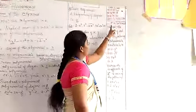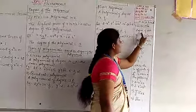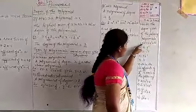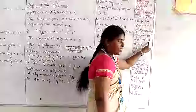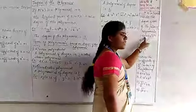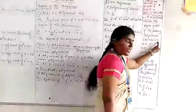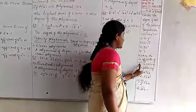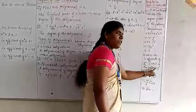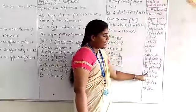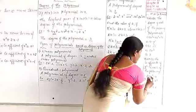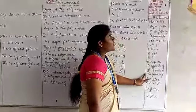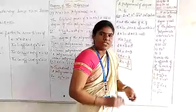Today's homework: First question — write the degrees of each of the following polynomials: 5x³ + 4x² + 7x. You mention only the highest degree. Second question — write the coefficients of x² in each of the following. Read the problems carefully and identify only the x² term's coefficient. Write these two problems. Thank you.